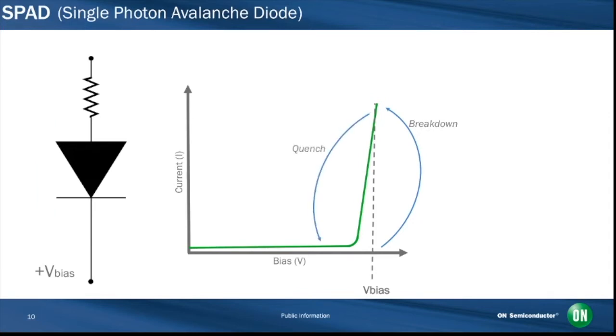Therefore lowering the internal electric field and stopping or quenching the avalanche. The diode then resets itself by recharging back to the bias voltage and is available to detect subsequent photons. In this way, each detected photon results in a cycle of avalanche, quench and reset with the SPAD functioning as a photon-triggered switch.